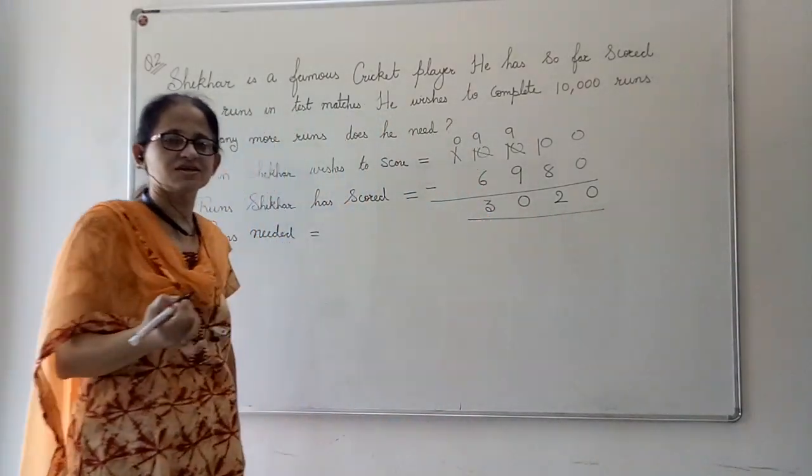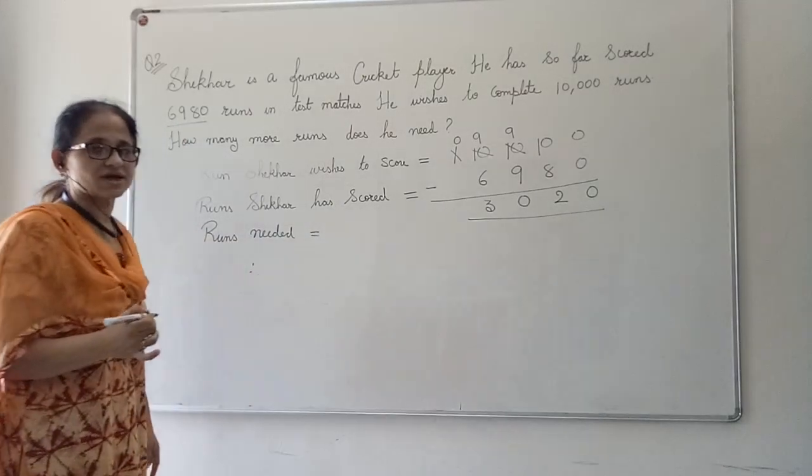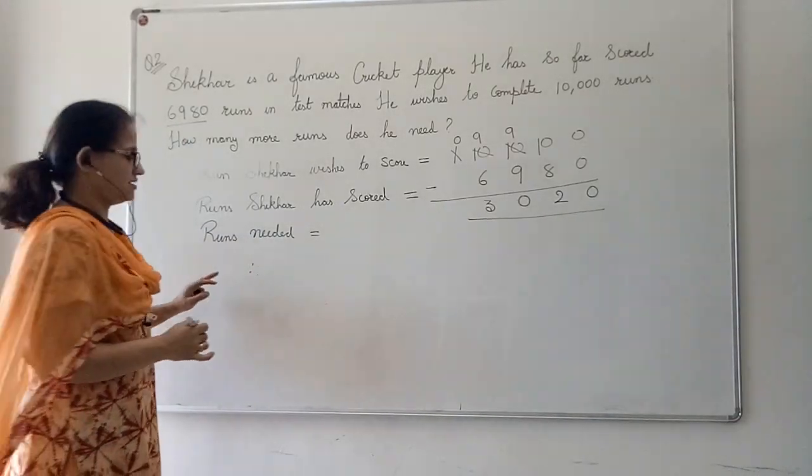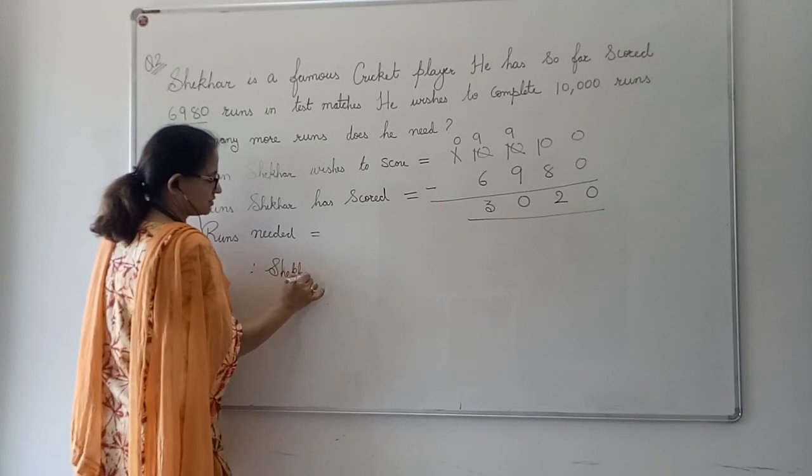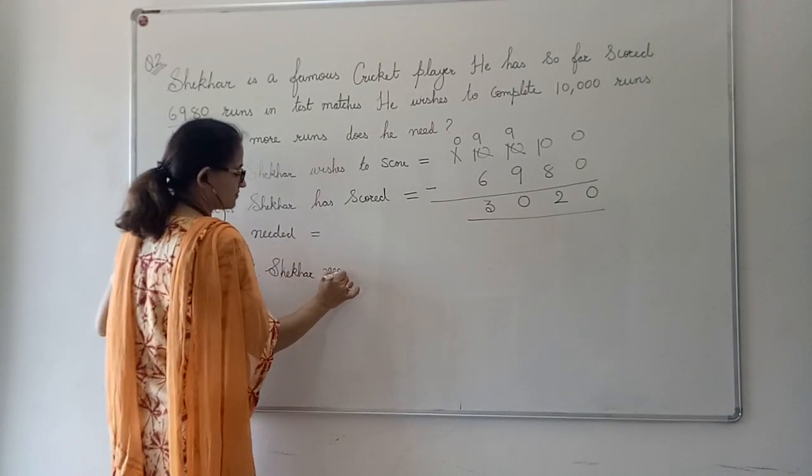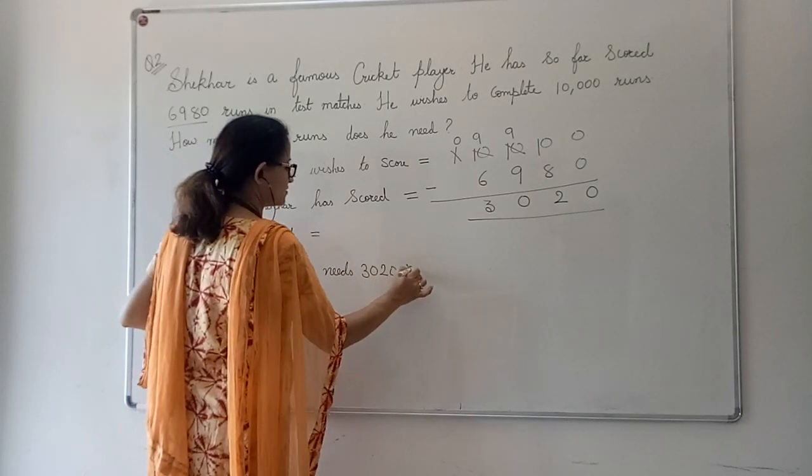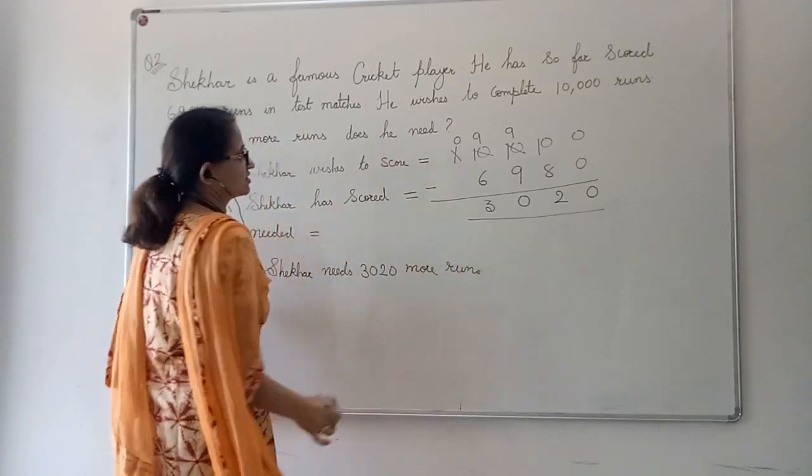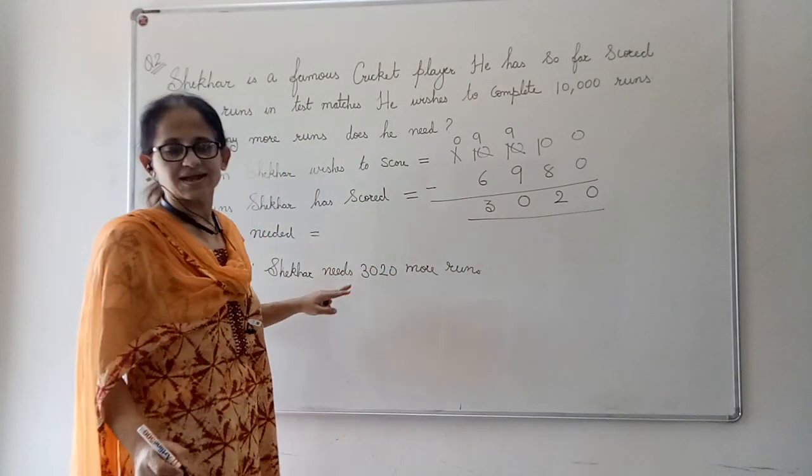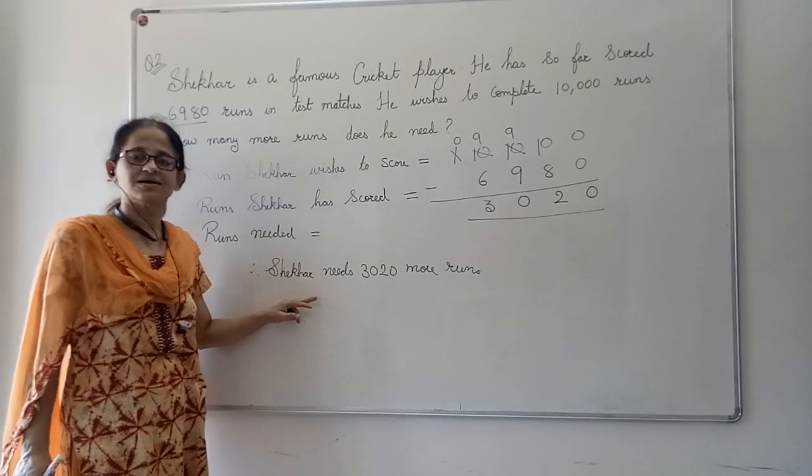So how many more runs does Shekhar need? Therefore, it is very important to write the concluding statement. Therefore, Shekhar needs 3,020 more runs to achieve his target. It is important that at the end of the problem sum we write the concluding statement. Thank you.